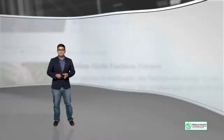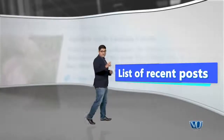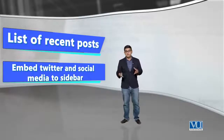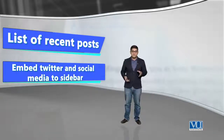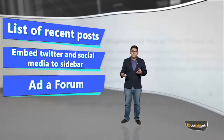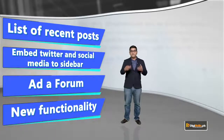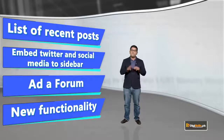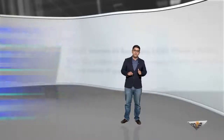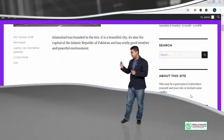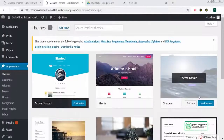Let's take an example of what widgets can do. Widgets can give you a list of recent posts. Widgets can embed your Twitter or social media handle to your sidebar. Widgets can add a form. Widgets can give you new functionality that you want but isn't available in WordPress by default. Widgets can do anything and everything you want. New widgets can also be installed via plugins, and depending on what plugin you find, you can bring that functionality to your website through widgets. We will look at some pre-installed widgets and then look at some new widgets that we will install through plugins.